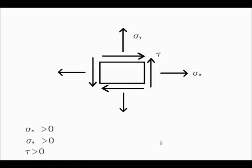If the force had been acting in the negative direction, the sign would have been positive for the positive face into negative for the negative direction, giving a negative or less than zero tau. Let this face be the x-plane. We will need this plane in the Mohr circle to determine the positions of different planes, which are calculated with respect to the position of this plane.